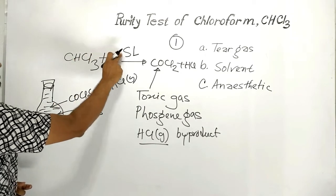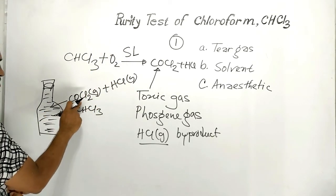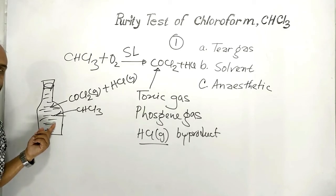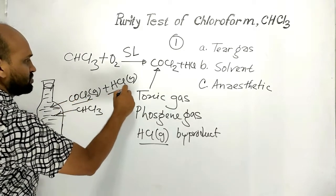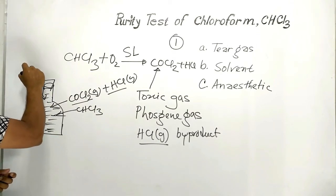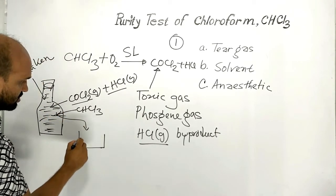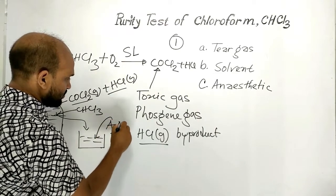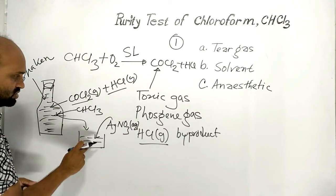This chloroform now contains toxic carbonyl chloride gas and hydrogen chloride gas if it is impure. How can we determine the presence of impurities? This bottle is shaken and its contents are taken in a beaker, and in this beaker an aqueous solution of silver nitrate is added to the solution.